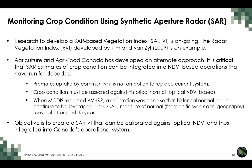We need to assess crop condition relative to historical normal, so we know what's typical for a specific geography and time in the growing season. For example, when MODIS replaced AVHRR in CCAP, a calibration was performed between those two data sources so that historical normals could continue to be leveraged — allowing CCAP to measure normal for a specific week and geography using data for the last 35 years. The objective of this work is therefore to create a SAR vegetation index that can be calibrated against optical NDVI and integrated into this existing operational system.